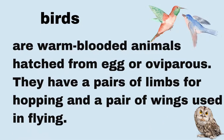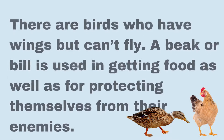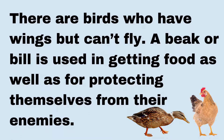Another group of vertebrates are birds. They are warm-blooded animals hatched from eggs, or oviparous. They have a pair of limbs for hopping and a pair of wings used in flying. Did you know that there are birds that have wings but can't fly? It is because their body is heavy, just like the ostrich, ducks, and chickens. A beak or a bill is used in getting food as well as for protecting themselves from their enemies.